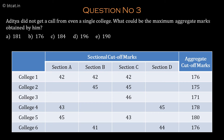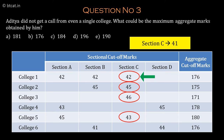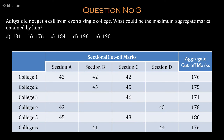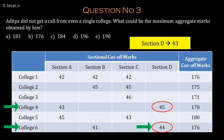In section C, the cutoffs are 42, 45, 46, and 43 — the lowest is 42. So if Aditya gets 41 in section C, he will not clear the cutoff for colleges 1, 2, 3, and 5. For colleges 4 and 6, section D covers them and the minimum cutoff there is 44. So if Aditya gets 43 in section D, he will not clear any college's sectional cutoff for section C or D.